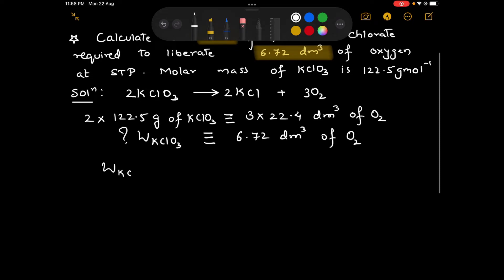Now it is simple. We have to find out the mass of KClO3, so we are going to cross multiply: 6.72 into 2 into 122.5 divided by 3 into 22.4.